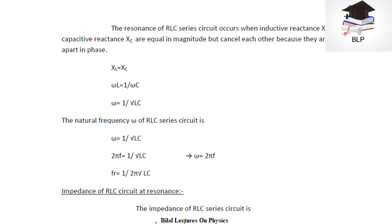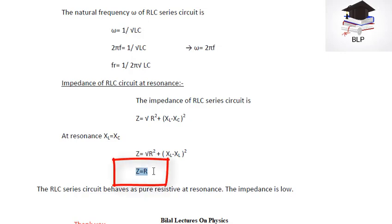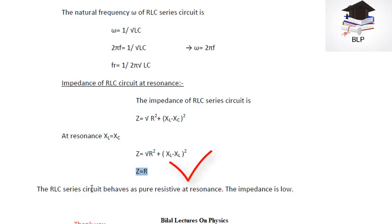Let's now look at the impedance of the RLC circuit at resonance. The impedance of an RLC circuit is Z equals the square root of R squared plus (XL minus XC) whole squared. At resonance condition, if we put XL equal to XC, the whole (XL minus XC) term will be cancelled out. So we have only Z equals the square root of R squared, and the square root and square cancel, giving us Z equals R. This confirms the condition stated in the properties: impedance equals resistance because at resonance, capacitive reactance and inductive reactance are equal. The RLC series circuit behaves as purely resistive at resonance, so impedance will be at its minimum in series context.